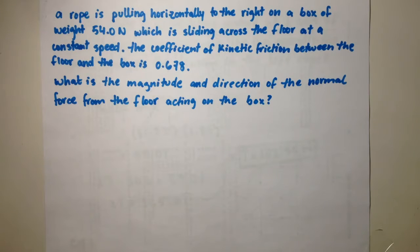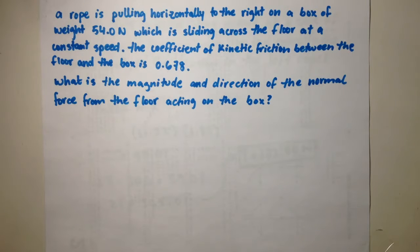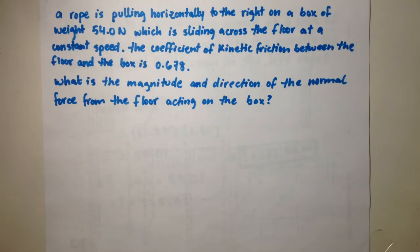A rope is pulling horizontally to the right on a box of weight 54 N, which is sliding across the floor at a constant speed. The coefficient of kinetic friction between the floor and the box is 0.678. What is the magnitude and direction of the normal force from the floor acting on the box?